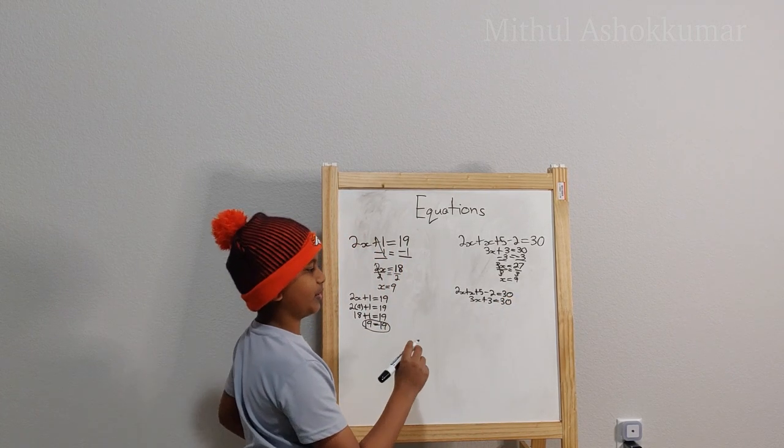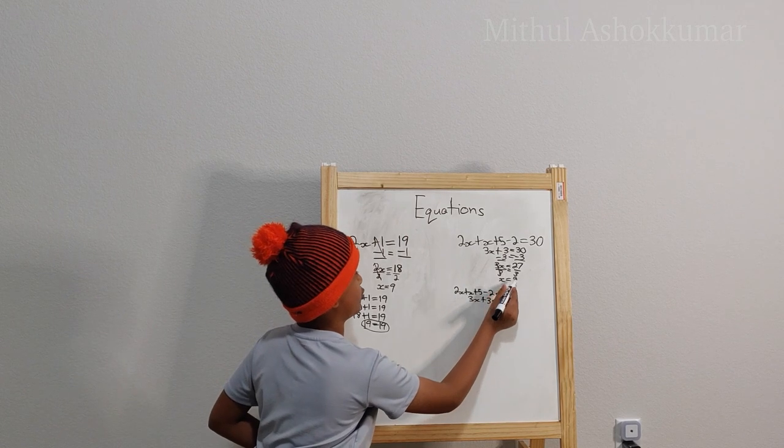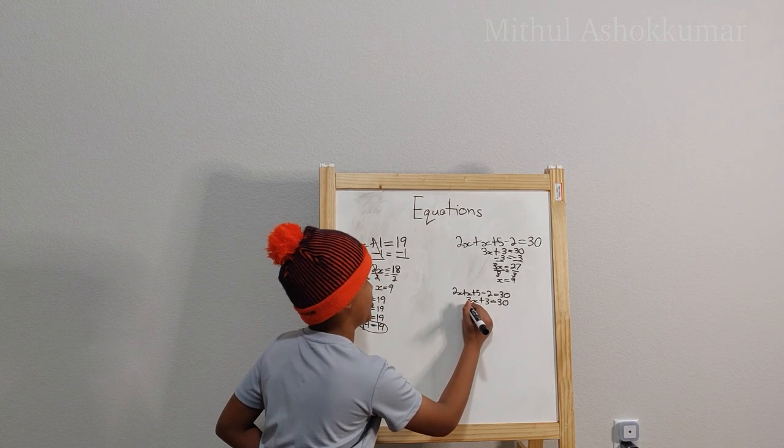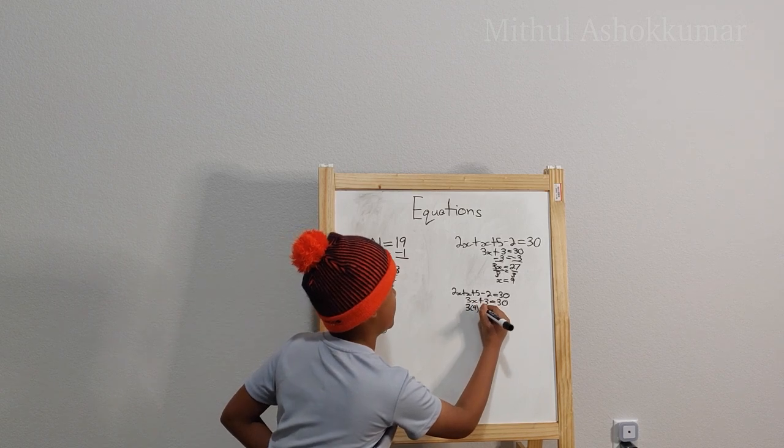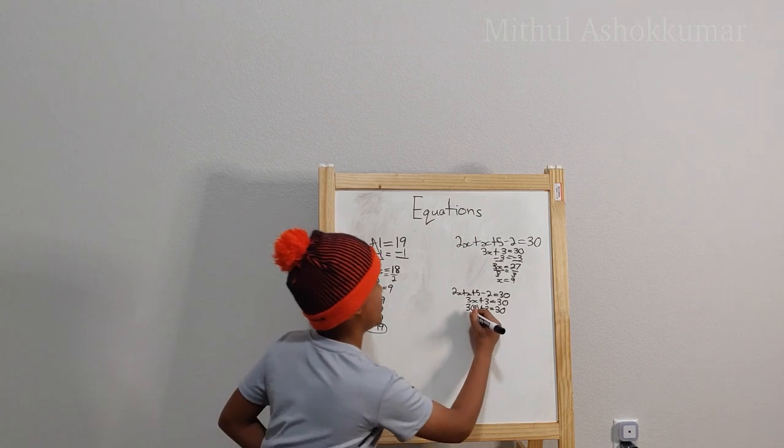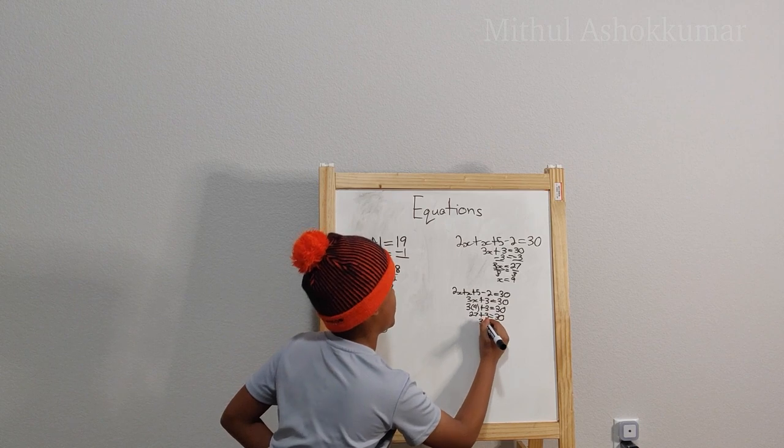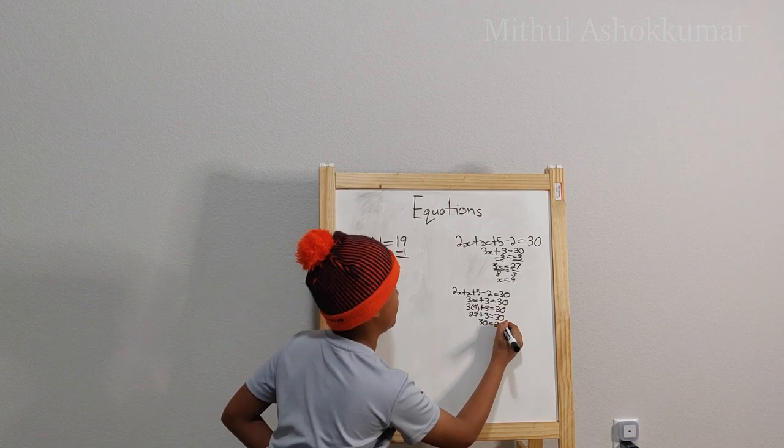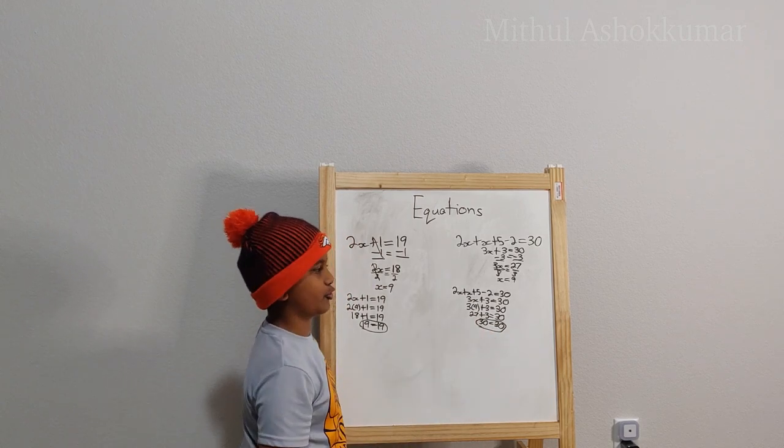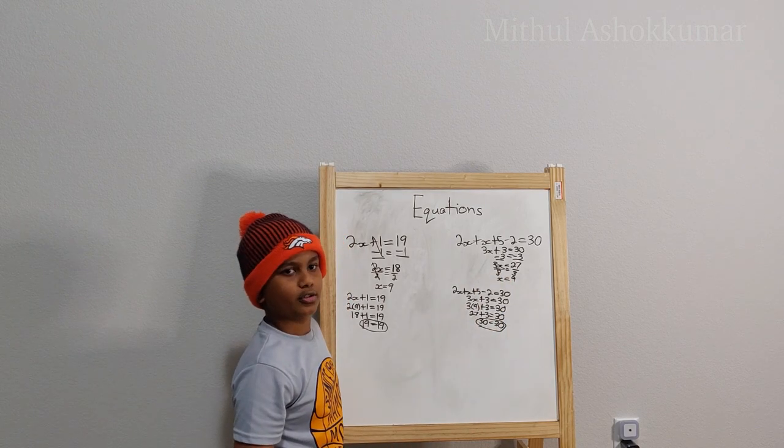Now don't solve it yet. We're not solving it. We're just checking. Now we have the value of x equals 9. So we'll just use 9 in the equation. 3 times 9 plus 3 which equals 30. 3 times 9 is 27 plus 3 equals 30. 30 equals 30. And there you have it. Both sides of the equation are true. So that means x equals 9 is the correct answer for this equation.